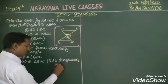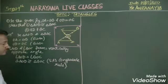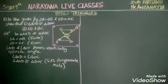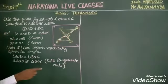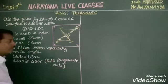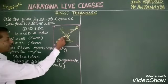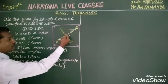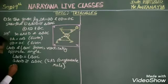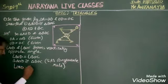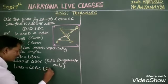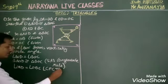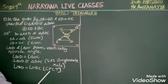Now, since the two triangles are congruent, the corresponding parts of congruent triangles are equal. So I can say, by CPCT — that is, corresponding parts of congruent triangles — the corresponding angles are equal.